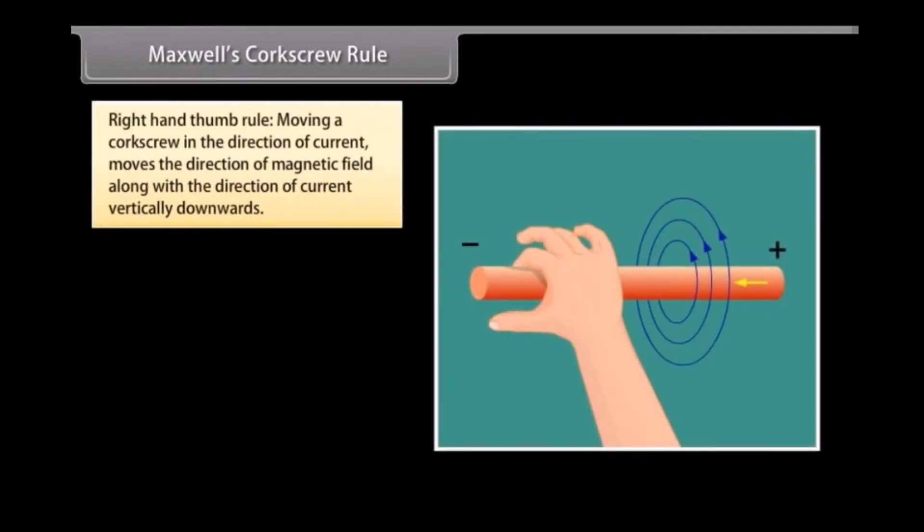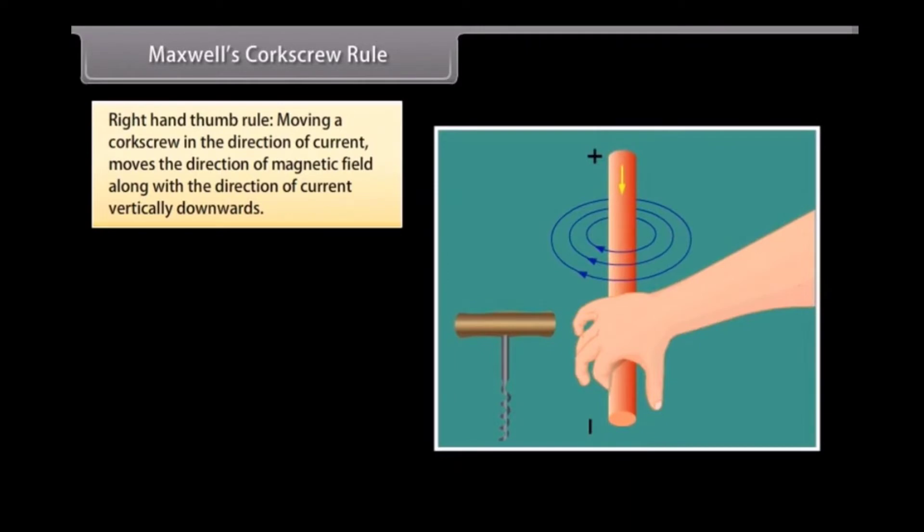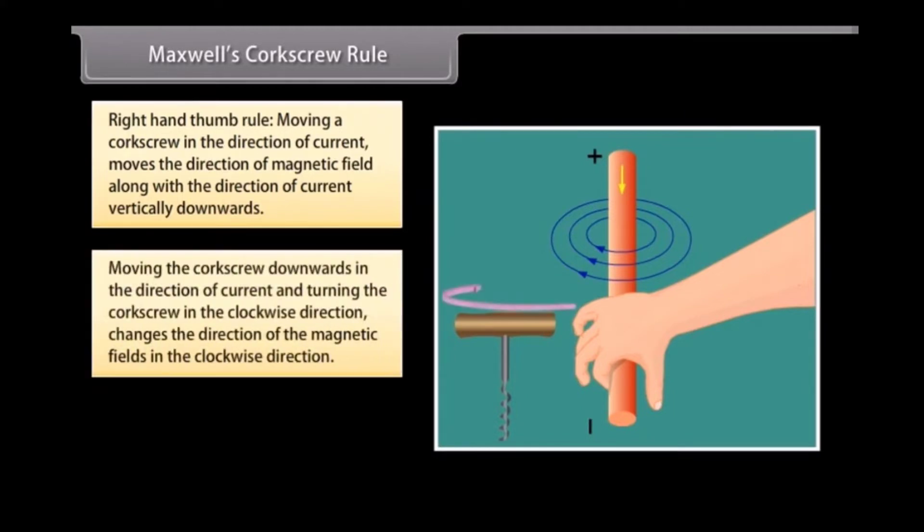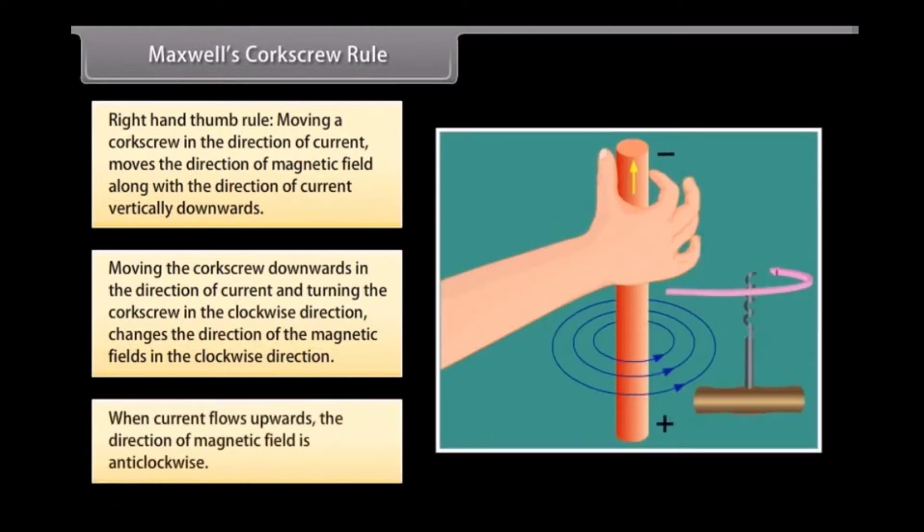Maxwell's Corkscrew Rule, also known as Right-Hand Thumb Rule, defines that moving a corkscrew in the direction of current moves the direction of magnetic field along with the direction of current vertically downwards. If we move the corkscrew downwards in the direction of current and the handle of corkscrew is turned in the clockwise direction, then the direction of the magnetic fields is in the clockwise direction. So, when current flows upwards, the direction of magnetic field changes and is anticlockwise.